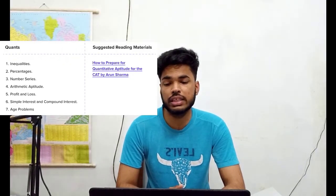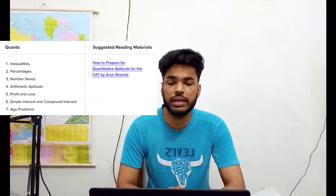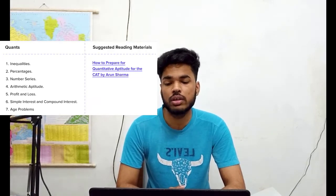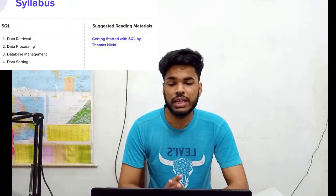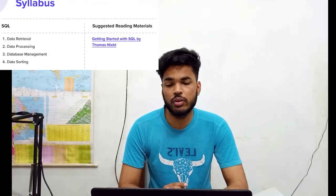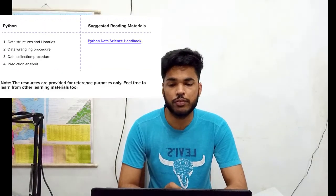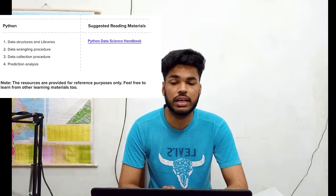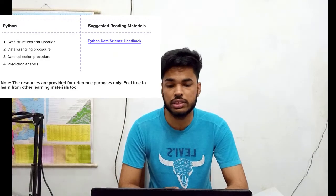From the Quantitative Aptitude section, they would be asking about inequalities, percentage, number series, arithmetic aptitude, profit and loss, and simple and compound interest. From SQL, they would be asking about data retrieval, data processing, data management, and data sorting. From Python, they would be asking about data structures and libraries, data wrangling process, data collection process, and prediction analysis.